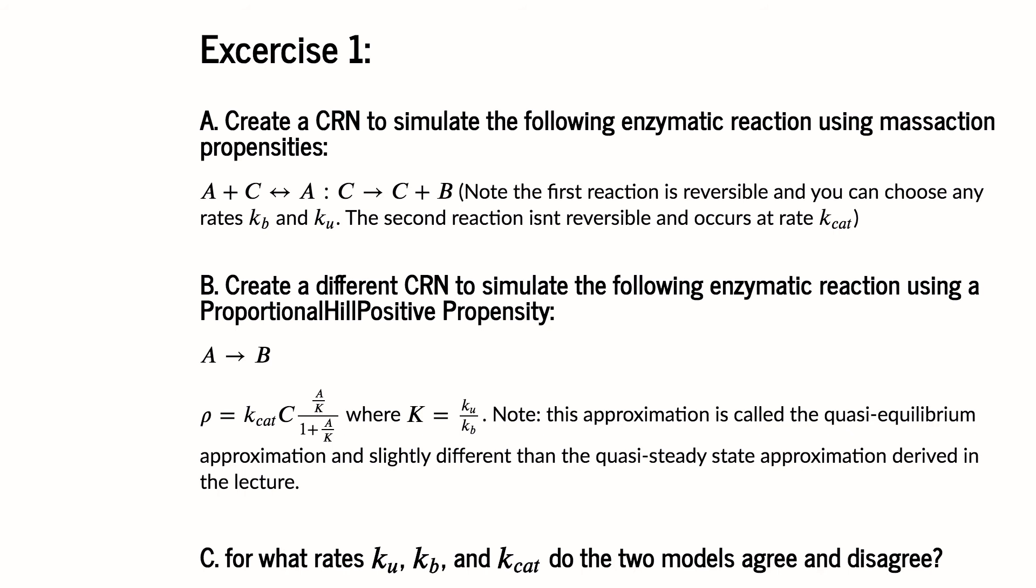And then I want you to write it out as a hill function chemical reaction network. And then I want you to examine how the different parameters, Ku, Kb, and Kcat, can cause the models to agree or disagree. To really look into the idea that hill functions approximate mass action kinetics, and sometimes those approximations break.